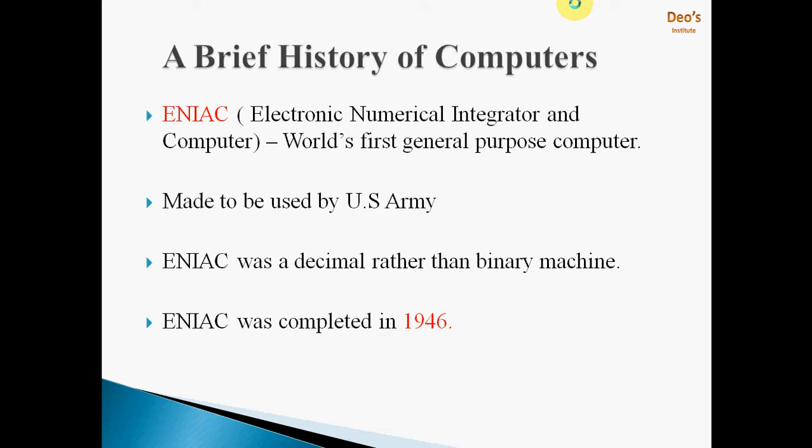Brief History of Computer: The first computer made was ENIAC, i.e., Electronic Numerical Integrated and Computer, which was the world's first general purpose computer. This computer was made to be used by the U.S. Army in World War. ENIAC was a decimal rather than a binary machine, and its implementation was completed around 1946.